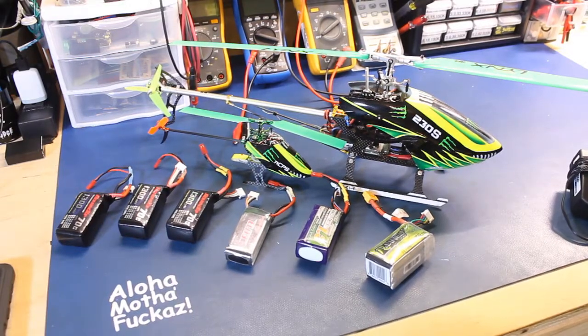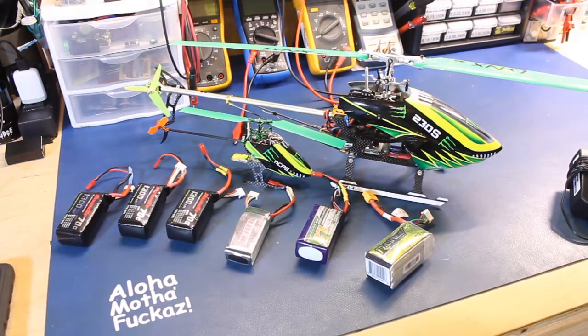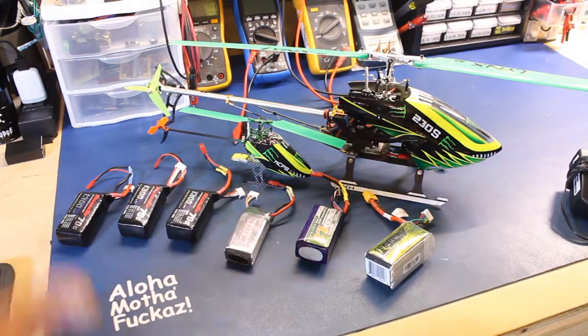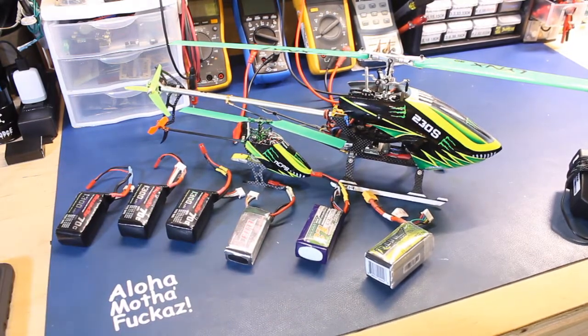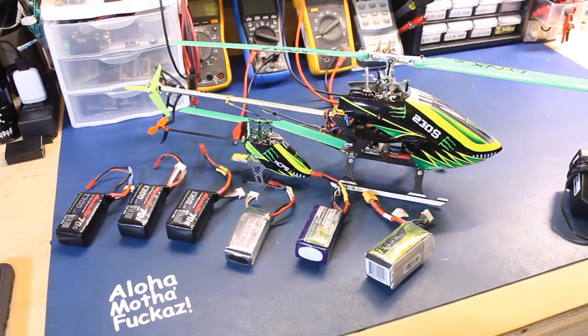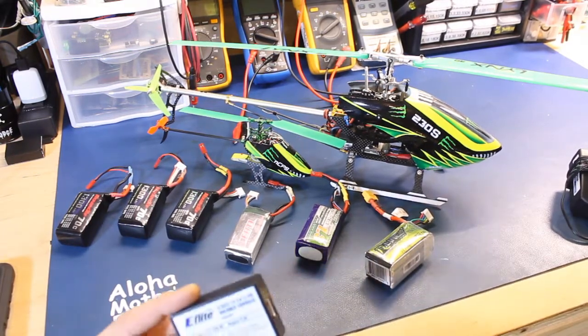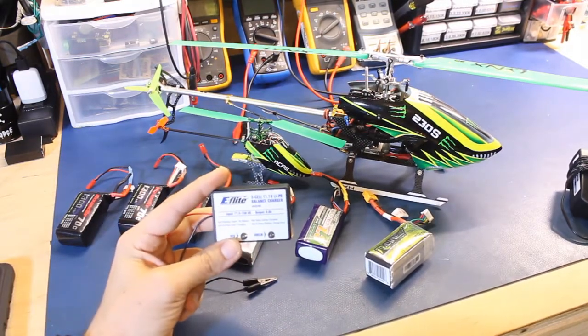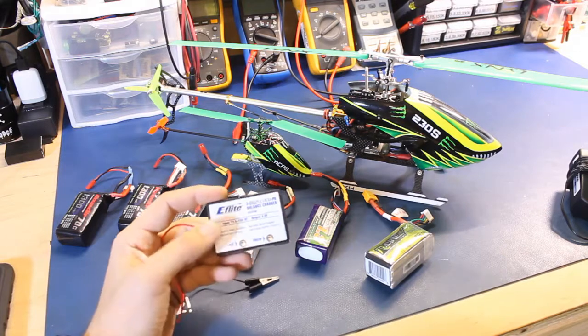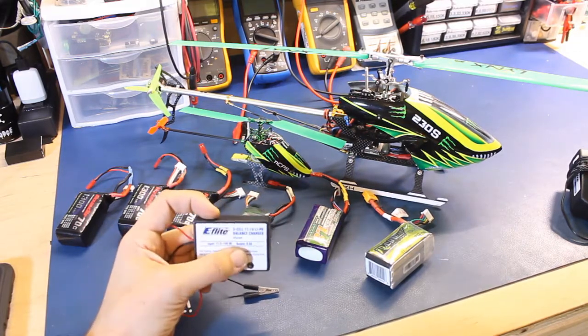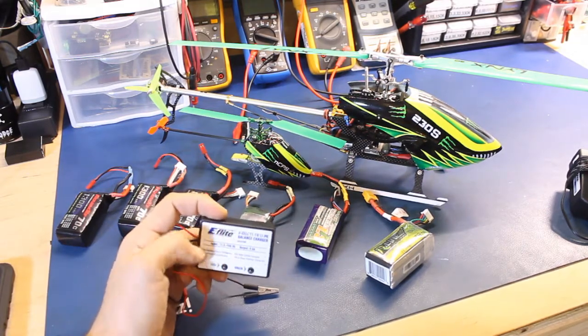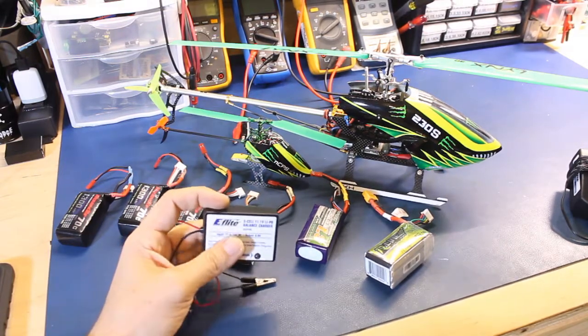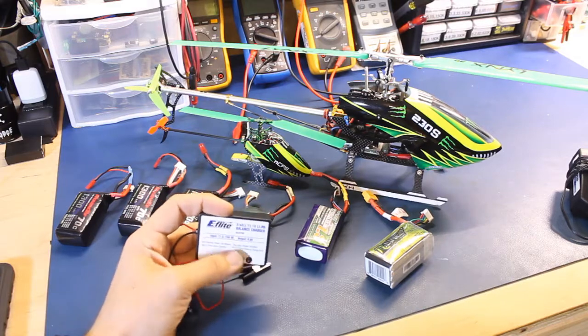What's up dudes? I got this Blade 230S helicopter. The batteries in it are 3-cell lithium. It came with this cheesy 800 milliamp charger. At that rate, you're getting 800 milliamps total, which is quite slow with these larger capacity batteries I've been using in it.